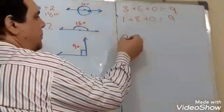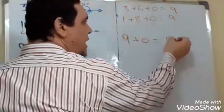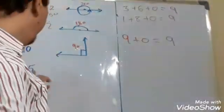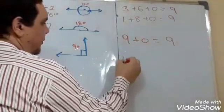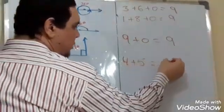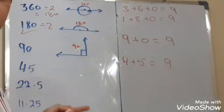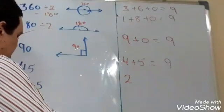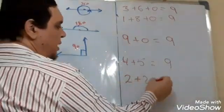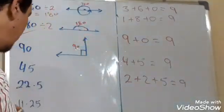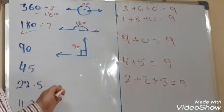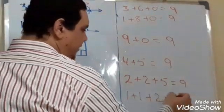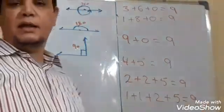Continuing, 90 divided by two equals 45. Four plus five equals also nine. And 45 divided by two equals 22.5. If we add all the digits of this number: 2 plus 2 plus 5 equals also nine. Then 22.5 divided by two equals 11.25. If we add all digits: 1 plus 1 plus 2 plus 5 equals nine. We can continue this pattern!